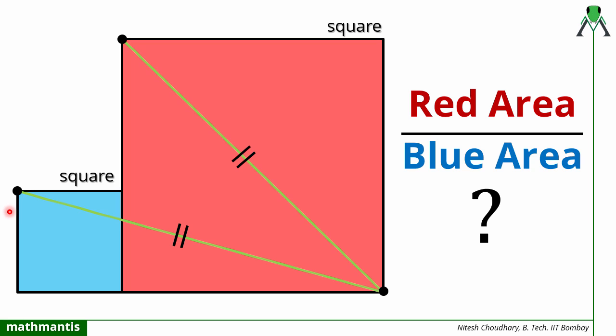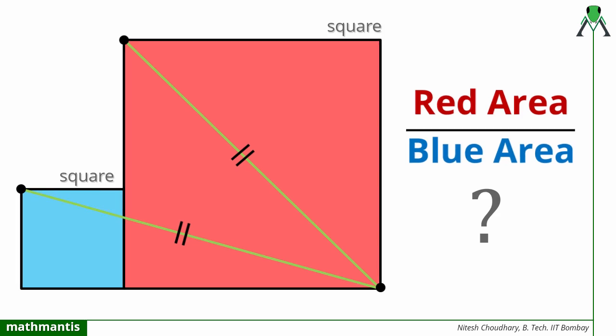Welcome back everyone. In this question, we have been given two squares - one red square and one blue square. They are touching each other and we have been given these two lengths equal. We have to find the ratio of these squares' areas, that is red square area upon blue square area.